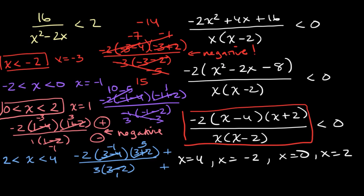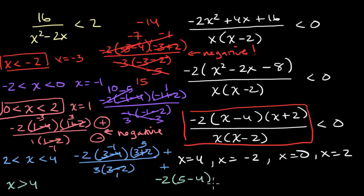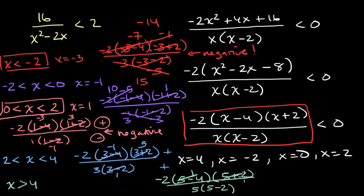Last, let's test x greater than four using x equals five. We get negative two times (five minus four) times (five plus two), all over five times (five minus two). This is negative two times positive one times positive seven, over five times three. The numerator is negative, the denominator is positive, so the result is negative — less than zero. This interval is also part of our solution set.